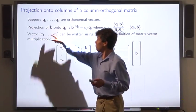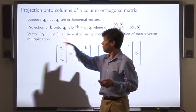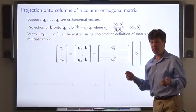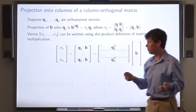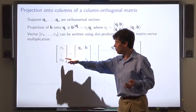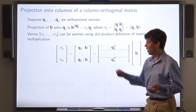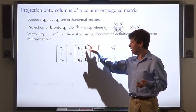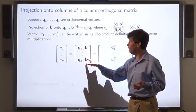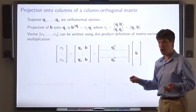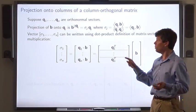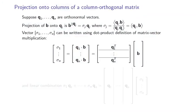So the vector of these scalars, the vector sigma 1 through sigma n, can be written using the dot product definition of matrix vector multiplication as sigma 1 through sigma n, which is the dot product of q1 with b through the dot product of qn with b. That's the product of this matrix times the vector b. This matrix has as its rows the vectors q1 through qn.